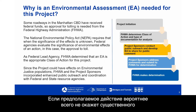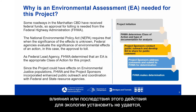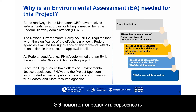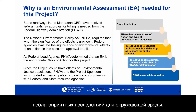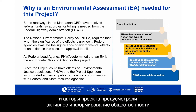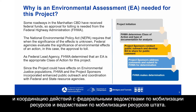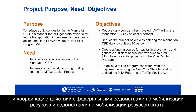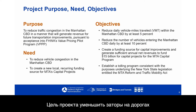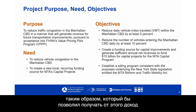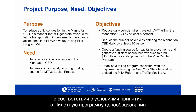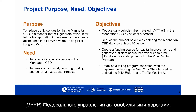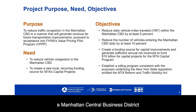For a proposed action that is not likely to have significant effects, or when the significance is unknown, the EA aids in determining the significance of adverse effects. Since the project could have effects on environmental justice populations, Federal Highway Administration and project sponsors incorporated enhanced public outreach. The project's purpose is to reduce traffic congestion in the Manhattan CBD in a manner that generates revenue for future transportation improvements, pursuant to acceptance into FHWA's Value Pricing Pilot Program, or VPPP.